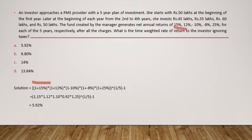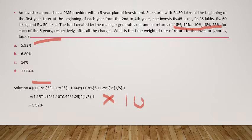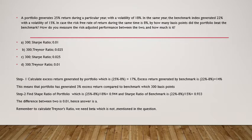After multiplying those five-year returns together, we raise the result to the power of 1/5 — because it's five-year data. Had it been four-year data, we'd use 1/4 — then subtract 1. Do not forget to multiply the result by 100 to convert it into percentage. The answer comes out as 5.92%.